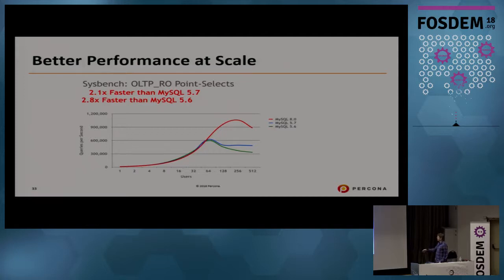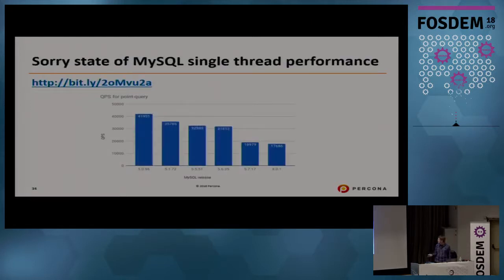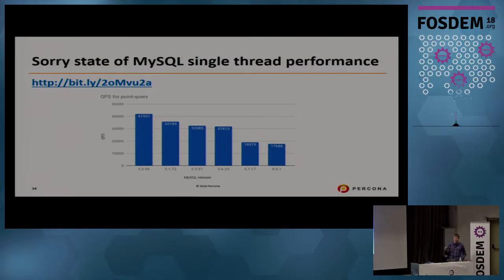These graphs show results from different MySQL versions. At high concurrency, each new version generally provides performance improvements — you can argue about the shape, but new versions are better at scale. But at the same time, single-thread performance was going down. Here's a link to a blog by Mark Callaghan, the self-proclaimed champion of making MySQL single-thread performance suck less — he's been doing a lot of investigation into this problem and attracting community attention to it.